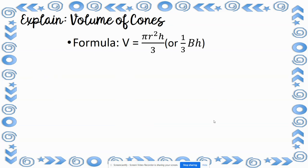Now we're going to look at the volume of cones. A cone is exactly the same as a cylinder, but it's just one-third of it. The formula you'll see most often is one-third times capital B times height, where capital B means area of the base. A cone's base is still a circle, so that's pi r squared. Multiplying by one-third is the same as dividing by 3, so the formula is pi r squared times height, divided by 3.